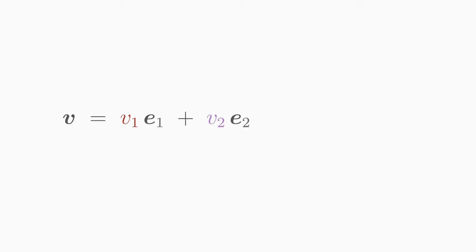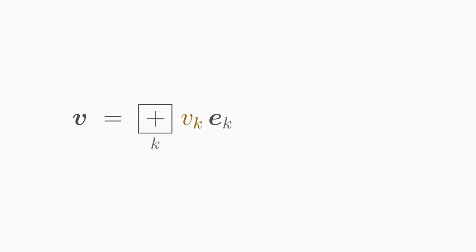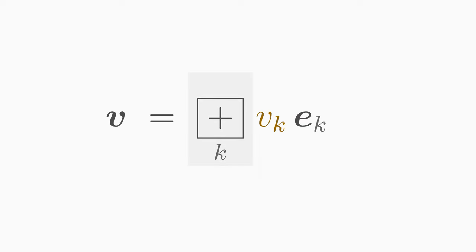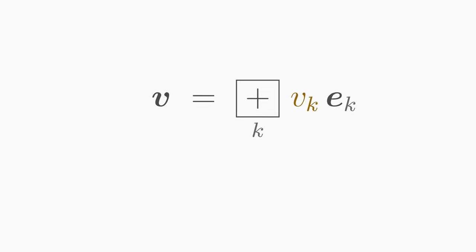We can represent a vector living in an n-dimensional vector space as a linear combination of basis vectors e_k spanning the vector space — you should know this from linear algebra. With the help of a basis, we can represent every possible vector in this vector space, where v_k are the components of the vector in the chosen basis. The components are not unique: by choosing a different basis, the vector will have different components.